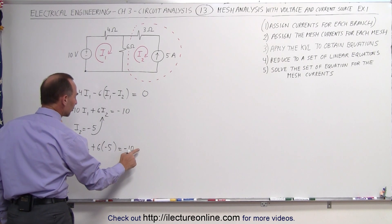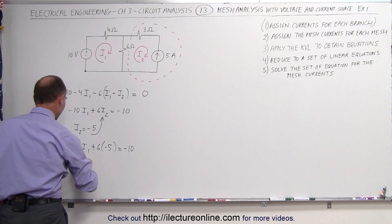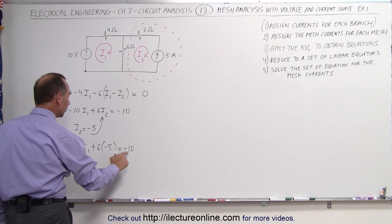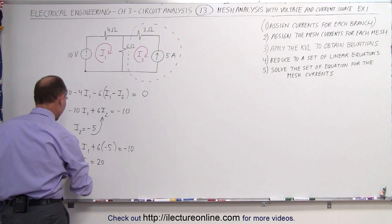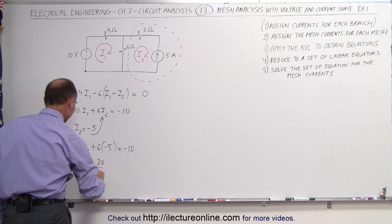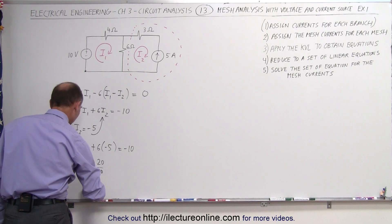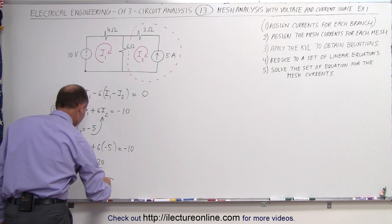That's a minus 30, move to the other side, that becomes plus 30, minus 10 gives us minus 10 I1 equals minus 10 plus 30, that's plus 20, and finally dividing both sides by negative 10, we get I1 equals minus 2 amps.